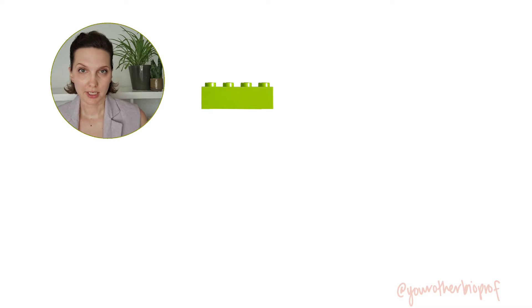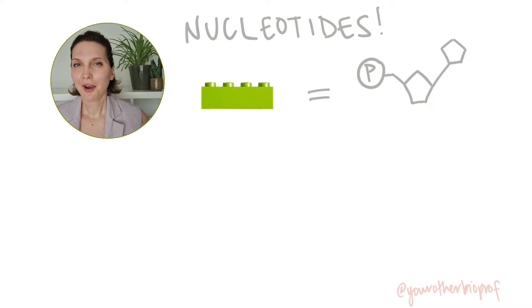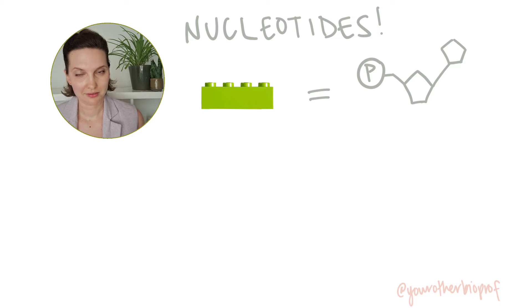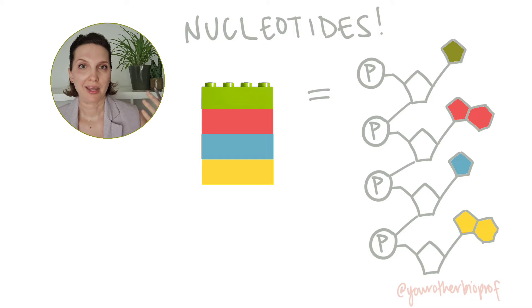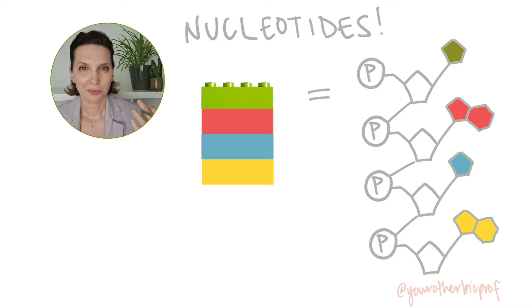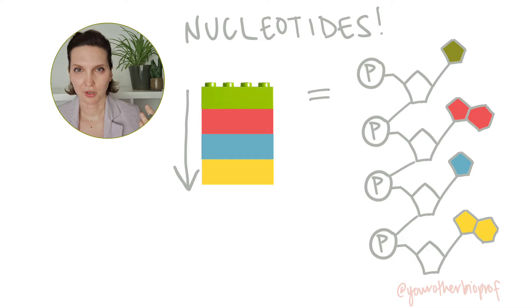The building blocks of DNA and RNA are called nucleotides. There are some important differences between DNA and RNA nucleotides, but they're not important for this conversation, so we're going to ignore them for right now. We can combine these little guys to make our big important molecules — but which direction does it go? Should we be reading green, red, blue, yellow, or the opposite?